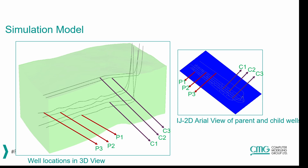The simulation model has been built with six wells completed in the Montney formation. Wells P1, P2, and P3 are the parent wells, and C1, C2, and C3 are the child wells. There are two child wells in the upper zone and C1 in the lower zone, with all three parent wells drilled in the lower zone as well. This image gives an aerial view of all the wells.